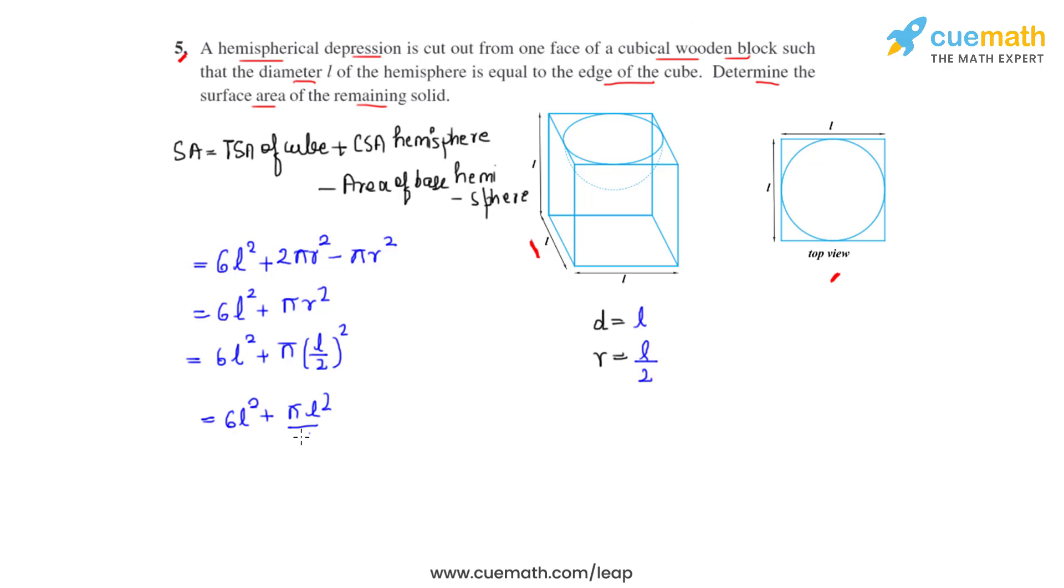And if we take the LCM we'll get the final answer as (L²/4)(π + 24), and this is how we determine the surface area of the remaining solid.